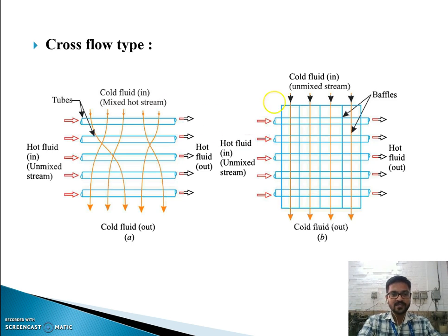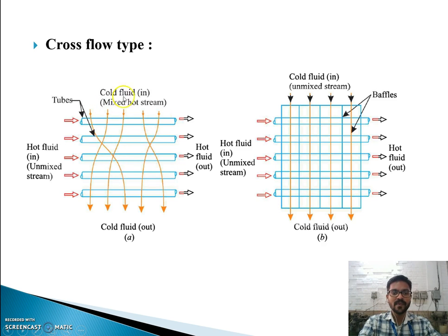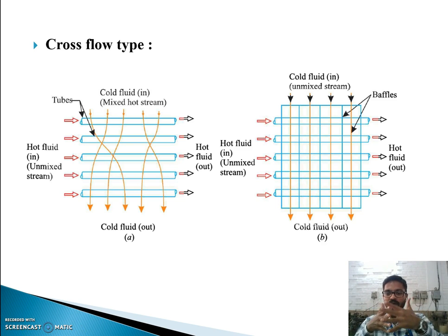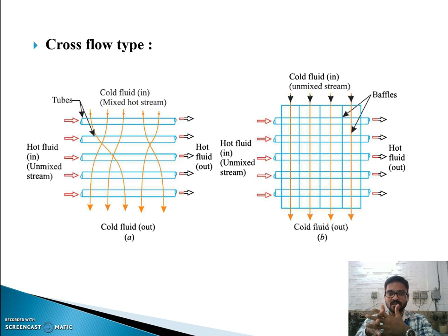In cross flow, as seen in the figure, the hot fluid flows through tubes while the cold fluid flows perpendicular to them, crossing each other — hence the name cross flow type.